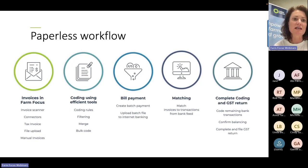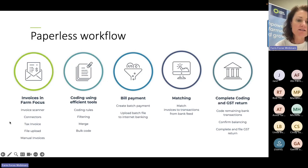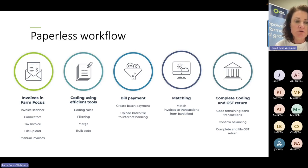The first thing I want to do is have a quick run through of the paperless workflow, or the monthly process. First of all, we need to get our invoices into Farm Focus, and there are five ways we can do that. All these options involve automation, which ensures accuracy, generates rich data, and saves you time.